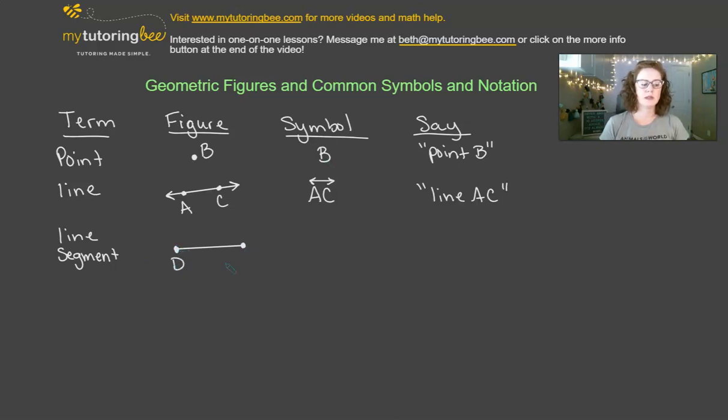So a lot of times, these are again labeled with letters, and so for our symbol, we would label this with DE with just a straight line on the top, and that tells us that it is a line segment, and you can see the difference between a line and a line segment. That's something that I see a lot of my students get confused when we're first starting off talking about geometric figures, and so we would call this line segment DC.